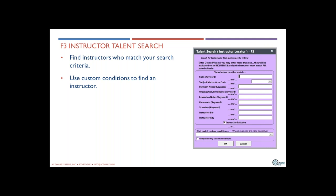The F3 key is the instructor talent search. If you've got a small program you may know every instructor, but if you're a larger program or covering for a staff member on leave and trying to find instructors with a certain skill, this tool is a great way to do it. You can put in keywords on the instructor and pull up a list of instructors in your database.